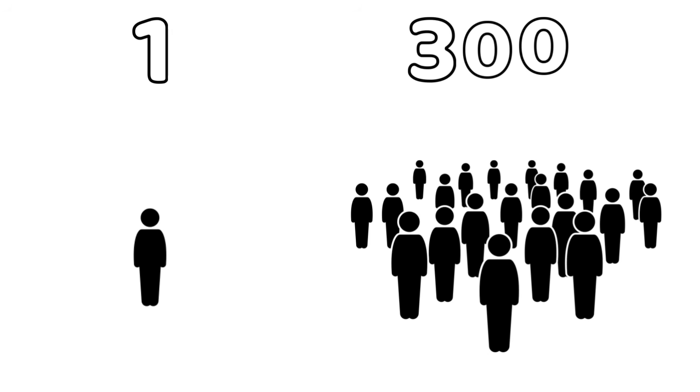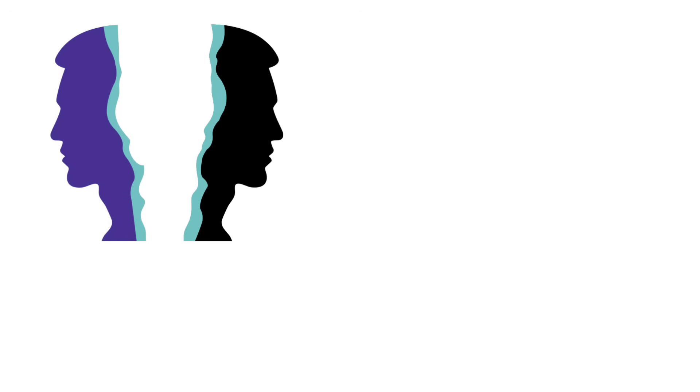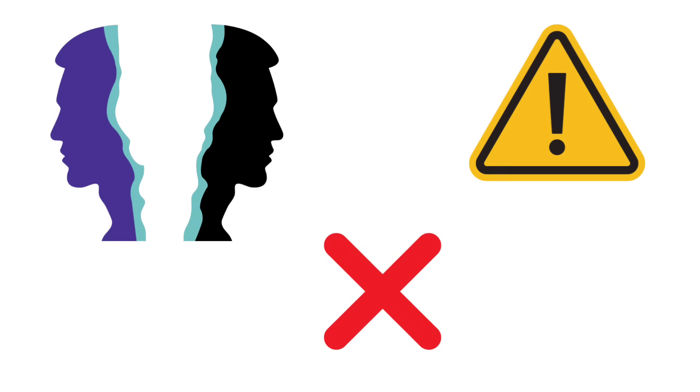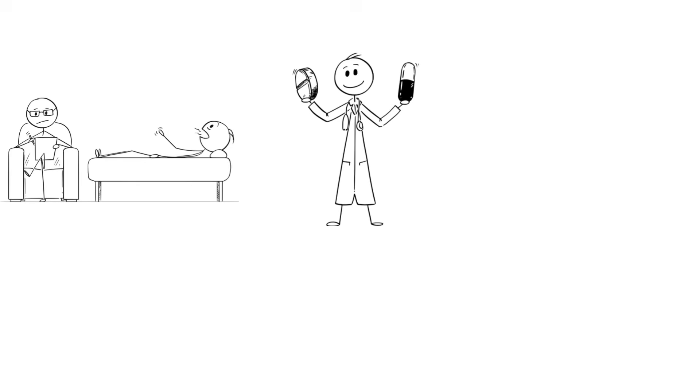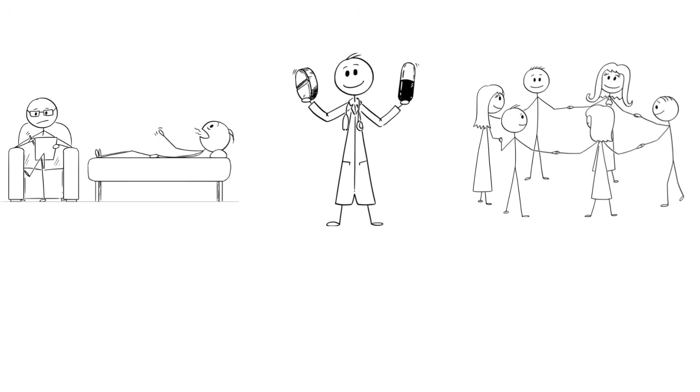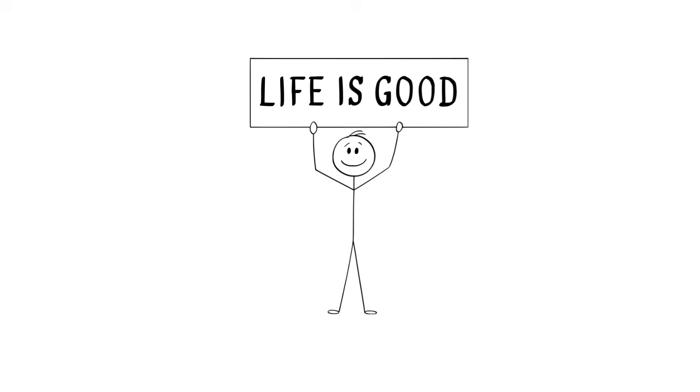Roughly one in every 300 people deal with this mental plot twist. And no, it's not about having a split personality or being dangerous. There's no magic cure, but with therapy, medication, and a strong support system, people can absolutely manage their symptoms and live fulfilling lives.